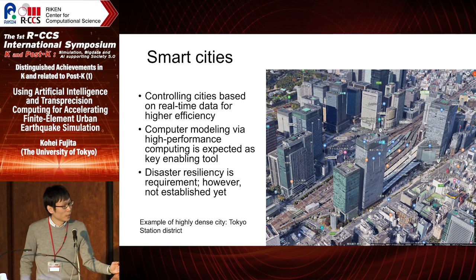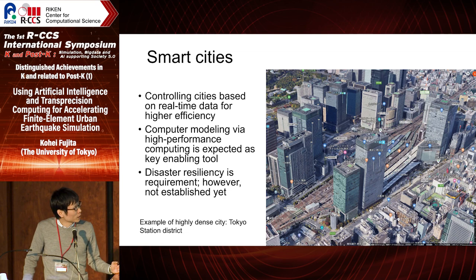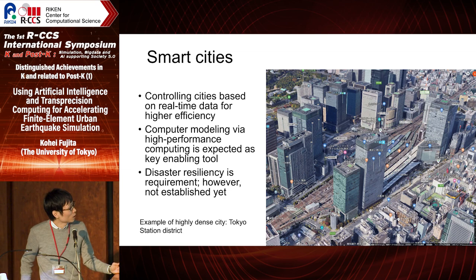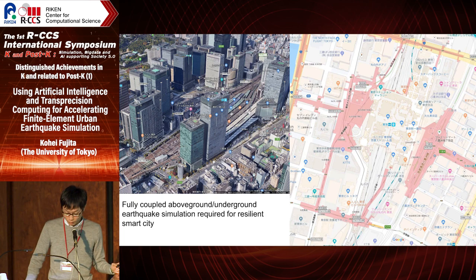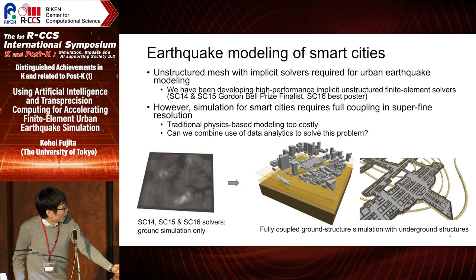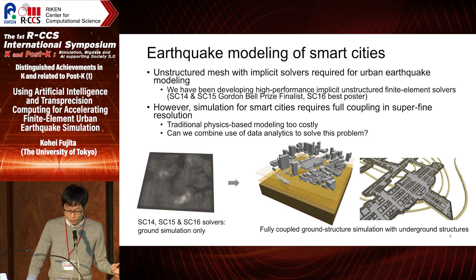When we are thinking of smart cities, disaster resiliency is a requirement but it's not established yet. For example, this is the Tokyo Station District — it not only has skyscrapers and railroad facilities but also underground subways and shopping malls. We need to simulate this whole domain for smart city design, and when considering urban earthquake simulations, we need to use implicit solvers with unstructured mesh.